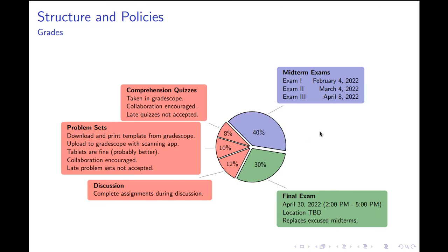Here's how your grades break down. Eight percent of your grade are the comprehension quizzes. Every topic we cover will have a quiz associated with it that you take inside Gradescope. You're encouraged to collaborate on these — you don't have to work alone and should seek as much help as you'd like. Late quizzes are not accepted. They are released every Monday with a deadline the following Tuesday.